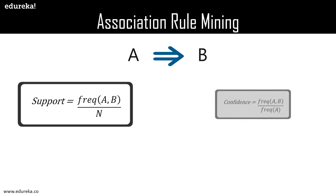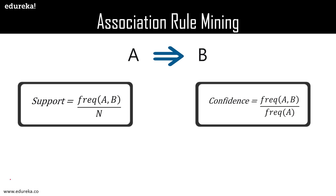Confidence tells us how often items A and B occur together given the number of times A occurs. This helps rule out products that barely get purchased together. According to sales data, we can define our minimum support and confidence values, plug them into the algorithm, filter the data, and create different rules. But even after filtering, if you still have 5,000 rules, that is practically impossible to work with.